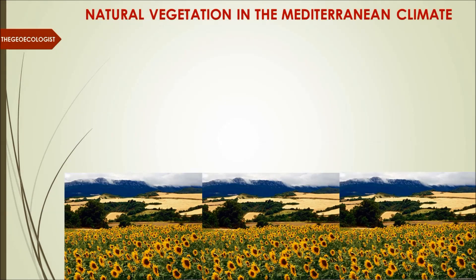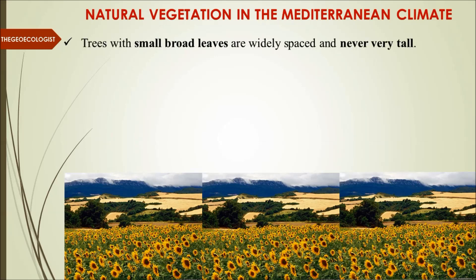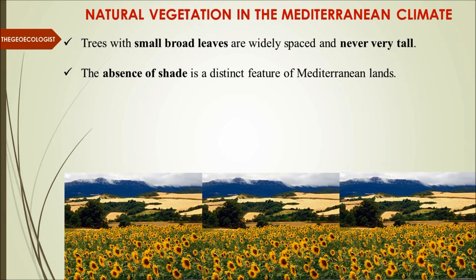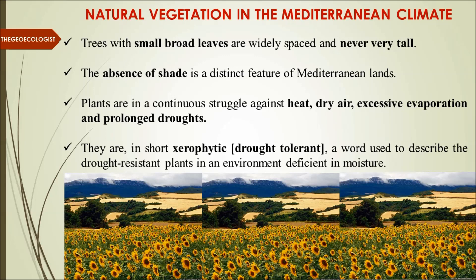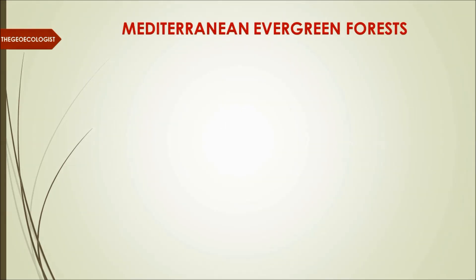Now let's look at natural vegetation in this biome. Trees have small broad leaves, are widely spaced, and are never very tall. Absence of shade is a distinct feature due to the lack of large canopy cover. Plants are in continuous struggle against excessive evaporation and prolonged drought, since rainfall is only in winters. There are short xerophytic, that is drought-tolerant, plants. The Mediterranean evergreen forest comprises open woodlands of evergreen oaks, found only in climatically most favored regions.